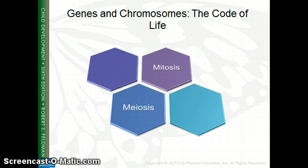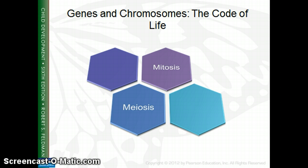Through the process of mitosis, nearly all of the cells in the body will contain the same 46 chromosomes of the zygote. With meiosis, each gamete receives one of the two chromosomes that make up the 23 pairs, along with random transformation of particular genes. The ultimate outcome is trillions of possible genetic combinations.